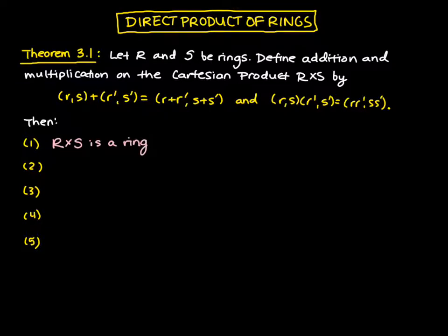We also have that the zero element of this ring is going to be equal to the coordinate pair where we have the zero element of R and the zero element of S. If we negate an element in R cross S, that's the same as negating R and negating S.